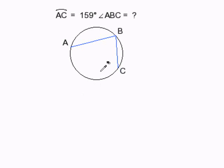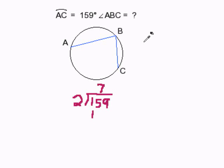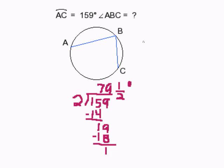So let's go ahead and do that. We have 2 going into 159, and that gives us 79.5 degrees. So that's the measurement of angle ABC — 79.5 degrees. And that completes our problem.